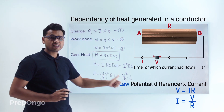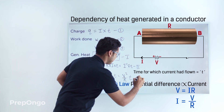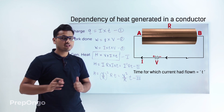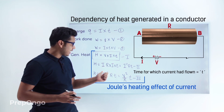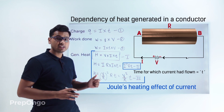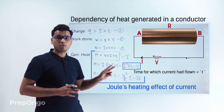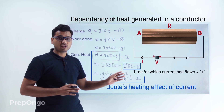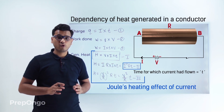Now all three expressions — H = VIt, H = I²Rt, and H = V²t/R — are also known as Joule's heating effect of current. We majorly use the second equation H = I²Rt. So the heat generated in the conductor depends directly on the square of the current flowing through it, directly on the resistance of the conductor, and on the time for which the current flows.